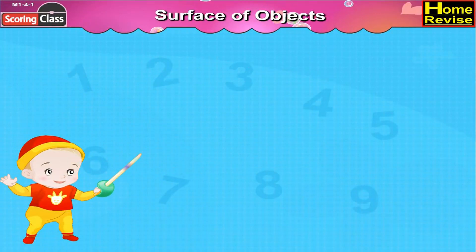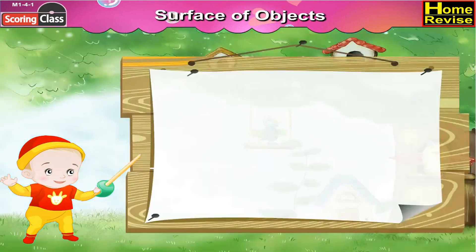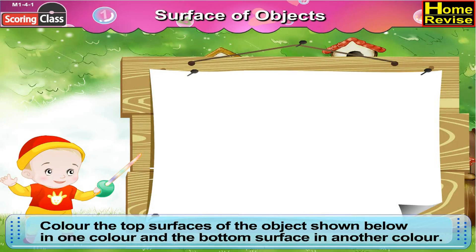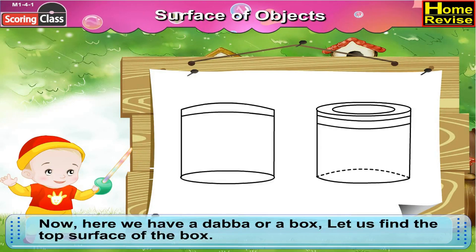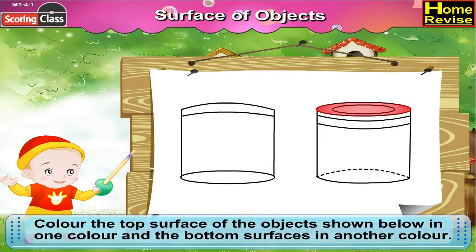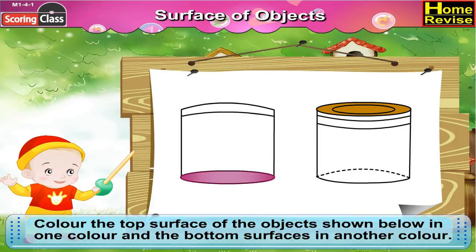Surfaces of objects. Colour the top surfaces of the objects shown below in one colour and the bottom surfaces in another colour. Now here we have a dabba or a box. First let us find the top surface of the box. This is the top surface — colour it with this colour. And that is the bottom surface — colour it with the other colour.